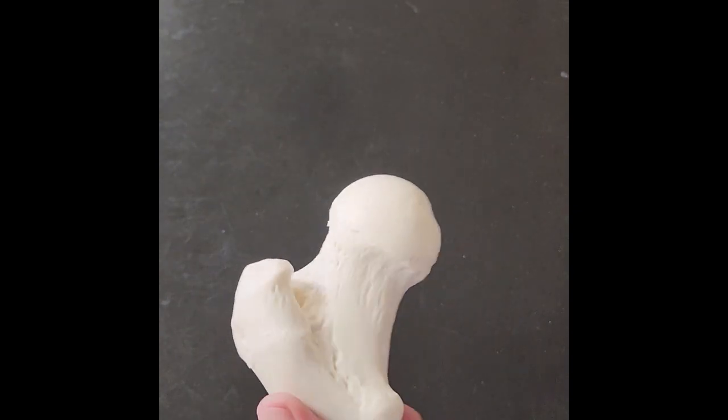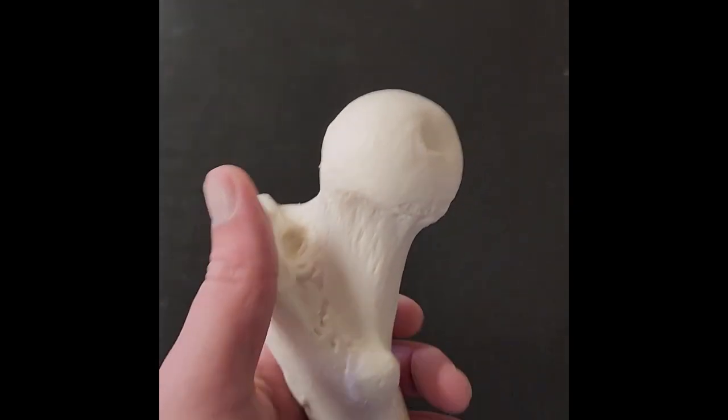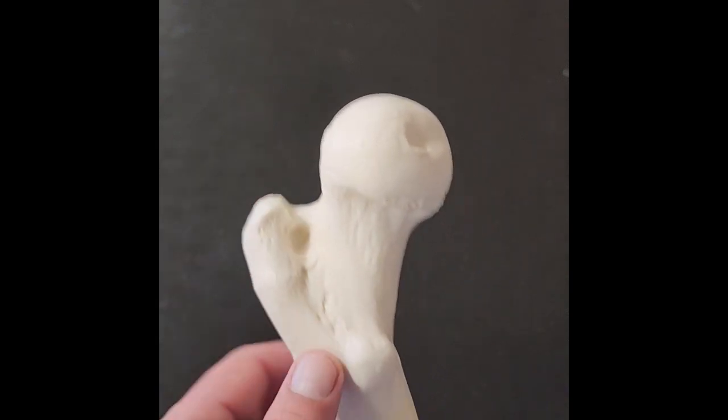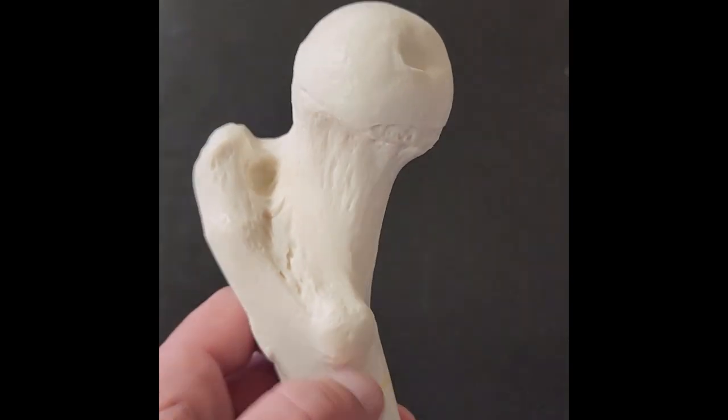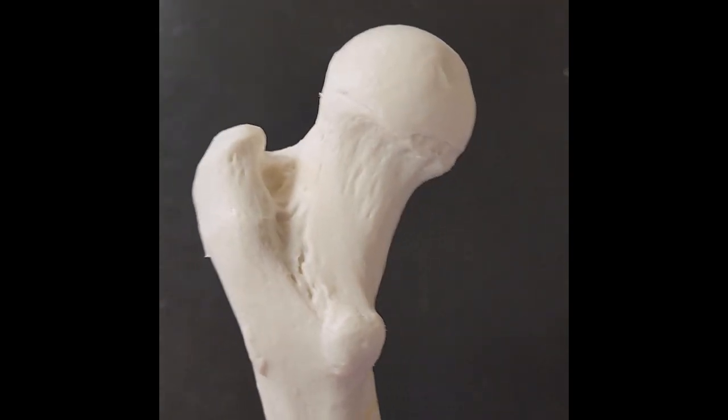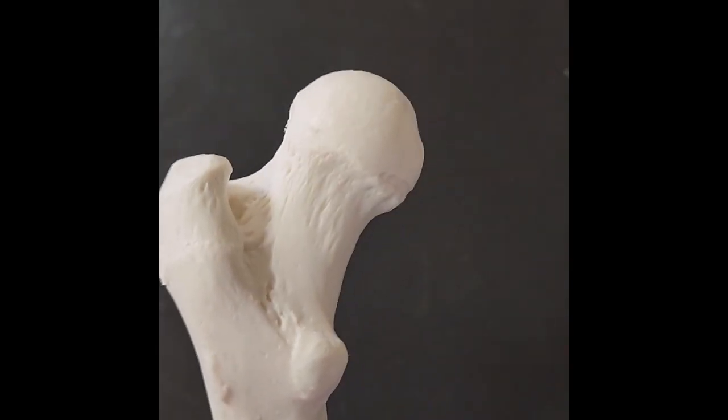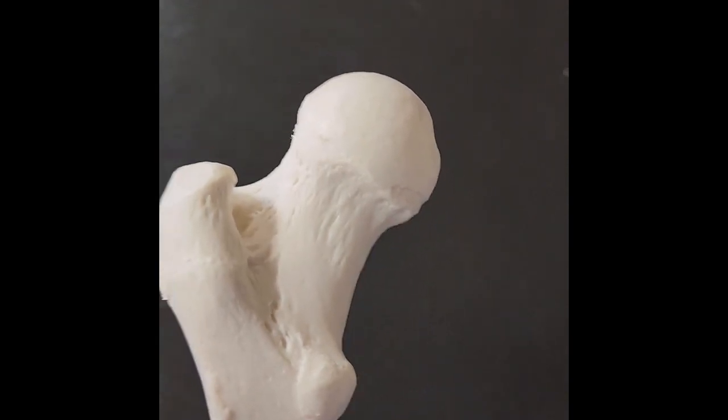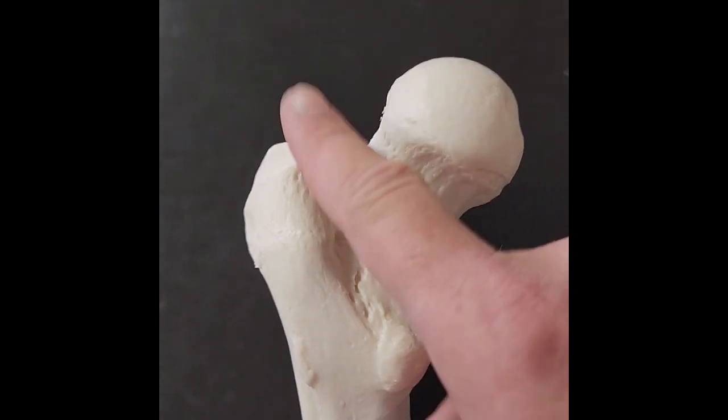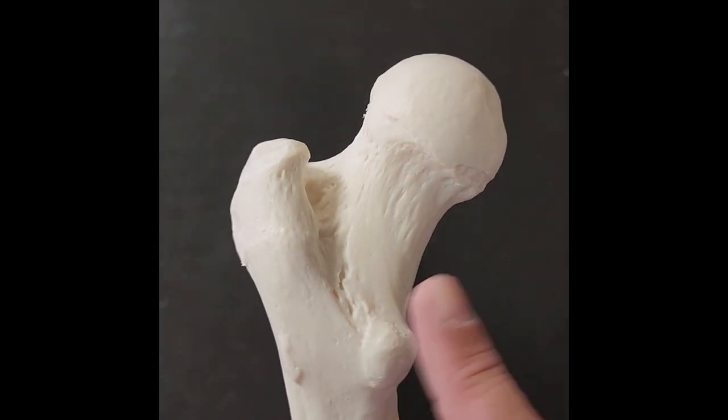Then I've got my greater and lesser trochanter. So on my femur, much easier. Greater trochanter, nice, big, clearly higher. Lesser trochanter, smaller, more subtle, and a little bit lower. So don't confuse these with the greater and lesser tubercles. Those were on the humerus. With the femur, we call them trochanter. So my greater trochanter and my lesser trochanter.